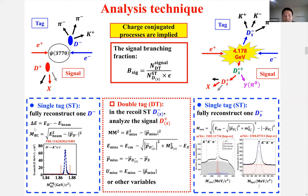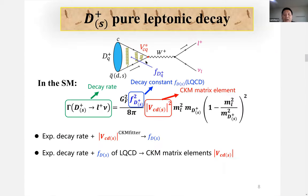Two parameters are used to extract single-tag yields: beam-constrained mass for D decays and recoil mass for Ds decays. For double-tag events, due to the undetected neutrino in the final state, the variable of missing mass squared is used to extract double-tag yields. Combining the single-tag yields, double-tag yields, and reconstruction efficiency, the branching fraction is measured.